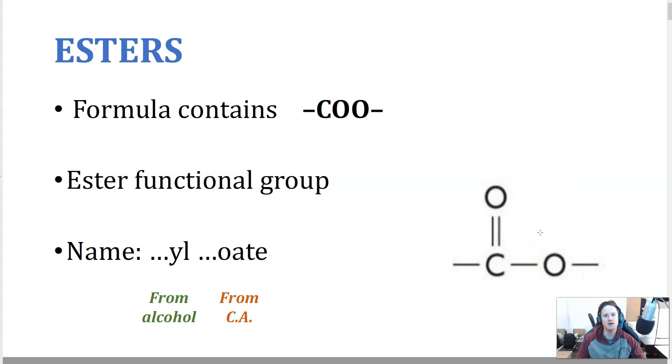In order to name an ester, there's two different molecules that combine to form an ester. One part is from an alcohol and one part is from a carboxylic acid. When you name an ester, the alcohol part is named first and that suffix is -yl and then the carboxylic acid part is named second and the ending of that is -oate.